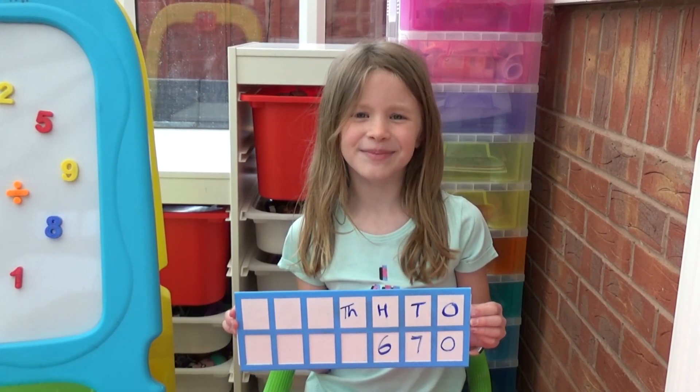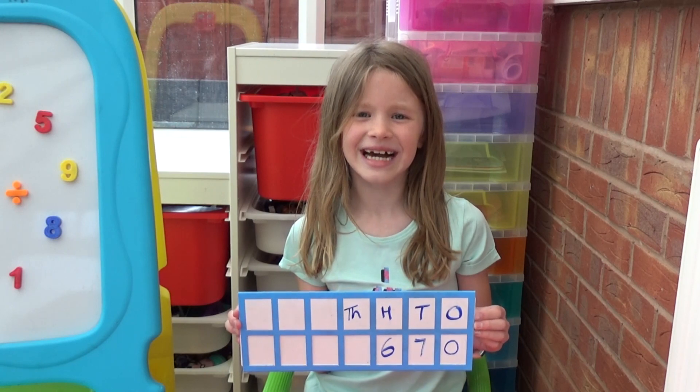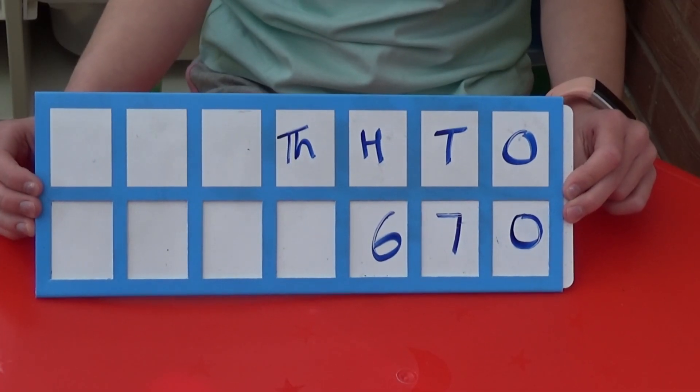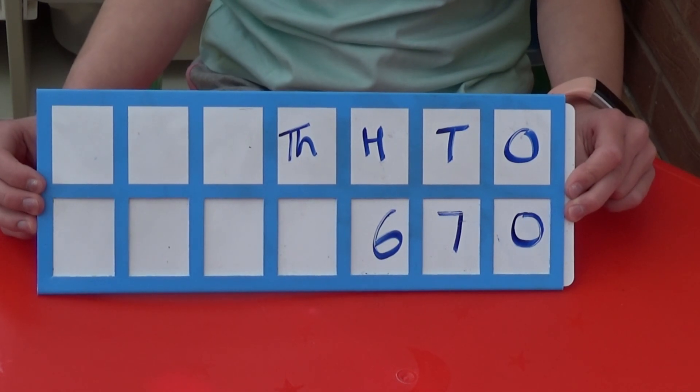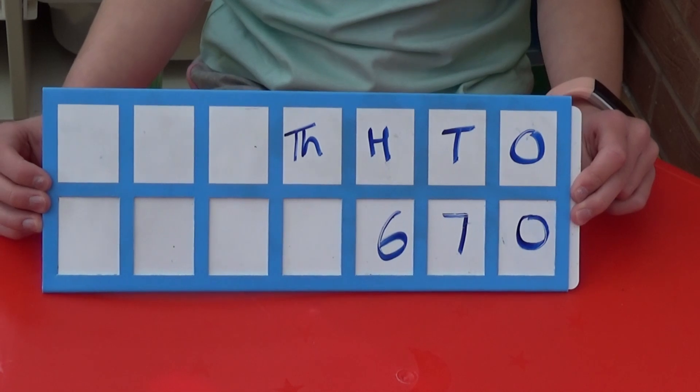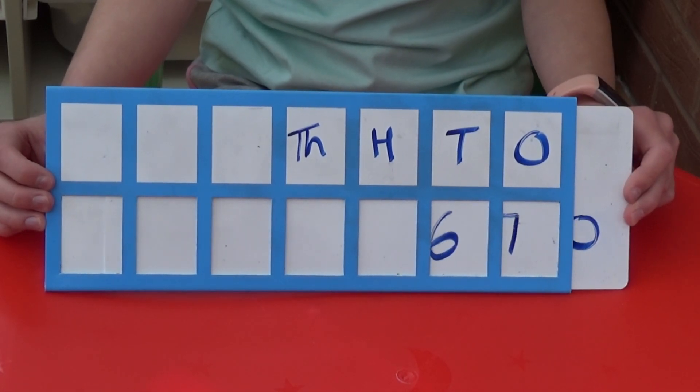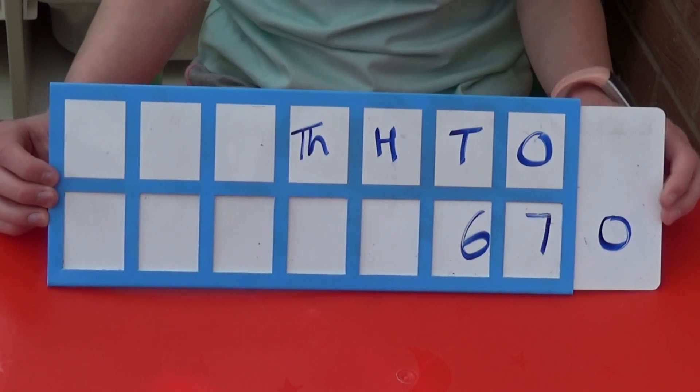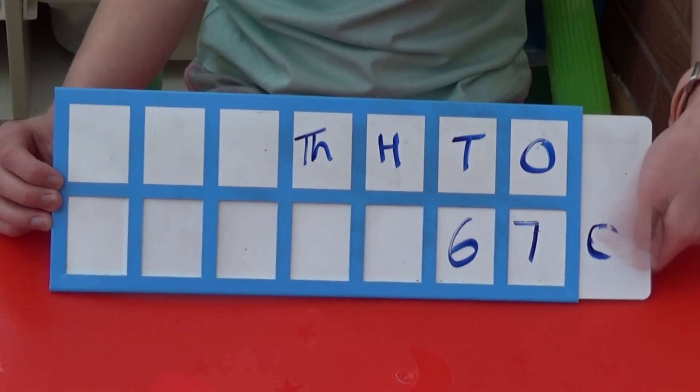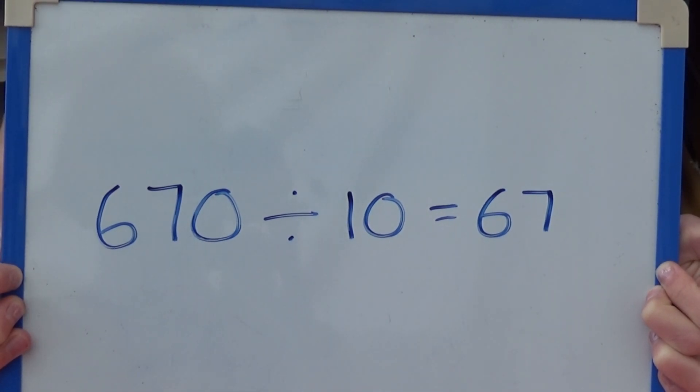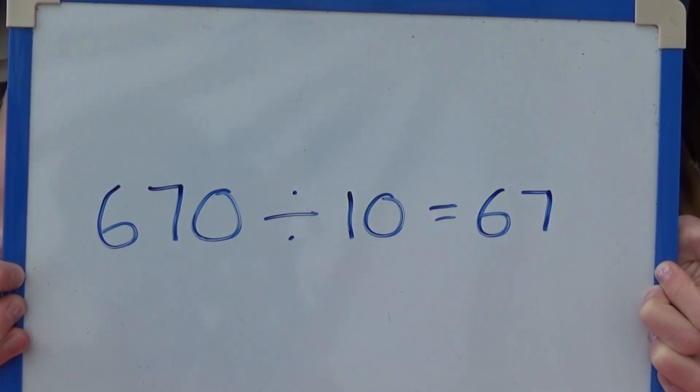We can also show this by using a place value slider. I have written 670 in the hundreds, tens and ones column of the place value slider. As we are dividing by 10, we need to pull the slider so that each digit moves one column to the right. I then have to rub off the zero. We can see from both of these that 670 divided by 10 equals 67.